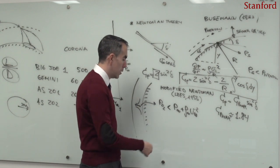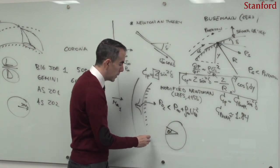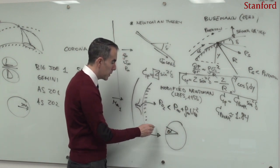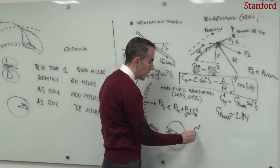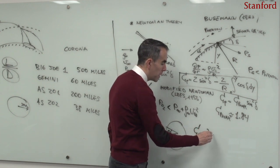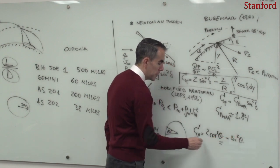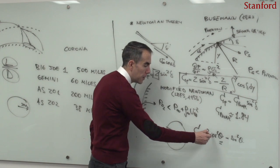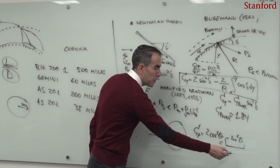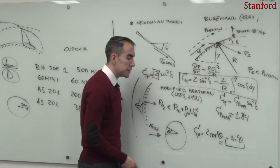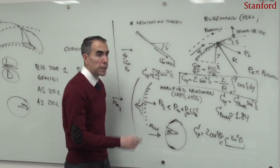For a sphere with latitude angle θ, the pressure coefficient becomes 2cos²θ − sin²θ. This centrifugal correction decreases the pressure coefficient on the flanks and poles of the sphere, thereby lowering the drag.